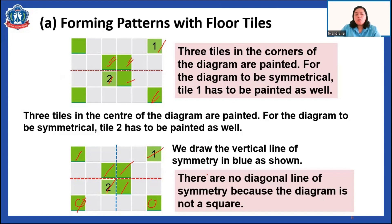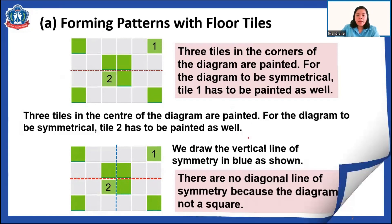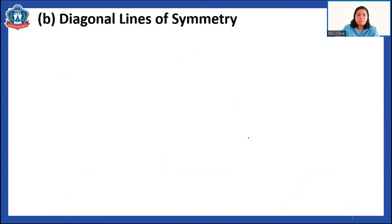This is how to make symmetrical patterns. We cannot put a diagonal line of symmetry in this diagram because it is not a square. We can only put a diagonal line as a line of symmetry if our diagram or shape is a square.